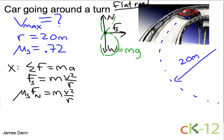Let's plug that in. So I have mu s mg equals m v squared over r. The mass cancels on both sides.